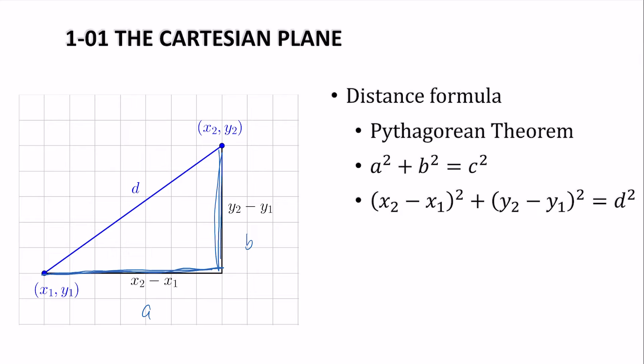This is a, b, and c. We'd have that. And then to solve for d, we'd just square root. And that's the distance formula. You should memorize it.